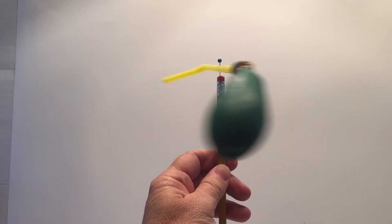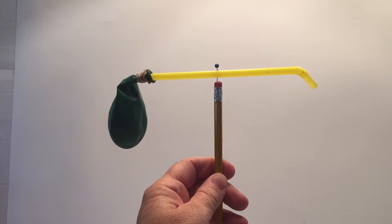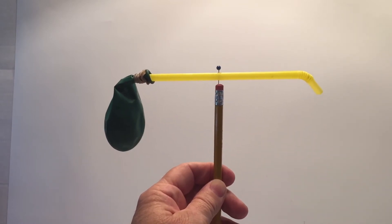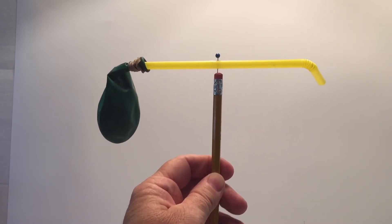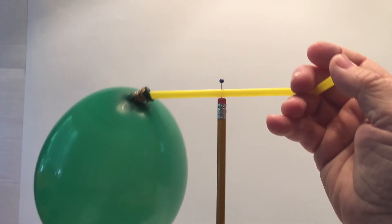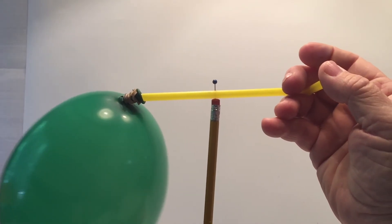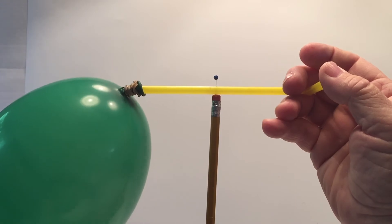Rockets are launched using the same principle. Rocket boosters are full of combustible fuel. Rocket fuel gases quickly expand and rush out through the exhaust nozzle. The air creates a thrust powerful enough to propel the rocket upward and out of the earth's atmosphere.